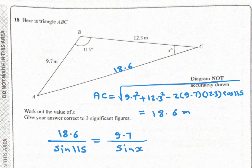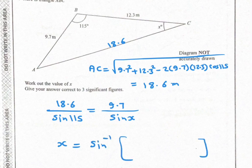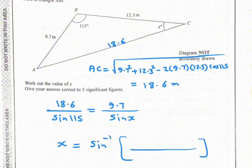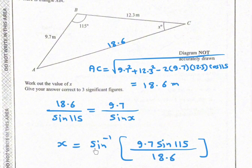Now to find X, cross multiply. 9.7 sine 115 divided by 18.6, then shift sine to find the angle itself.